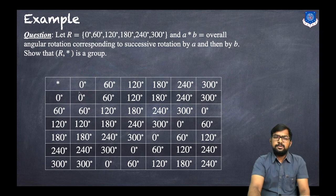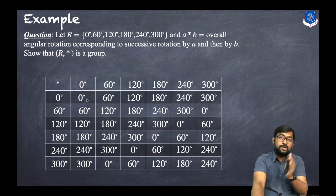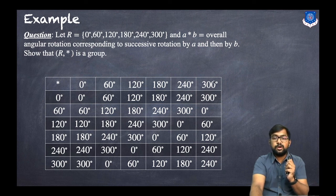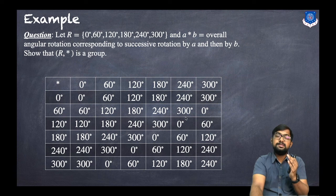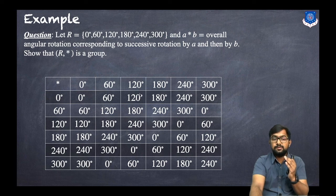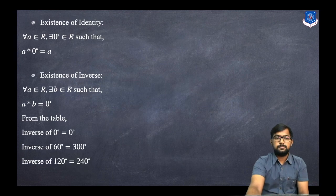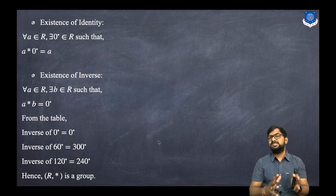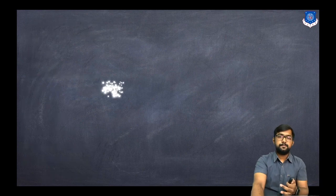Continuing from the table: inverse of 120° is 240°, inverse of 180° is 180°, inverse of 240° is 120°, and inverse of 300° is 60°. So every element possesses an inverse. Hence (R, star) satisfies all four properties — closure, associativity, identity, and inverse — and is therefore a group.